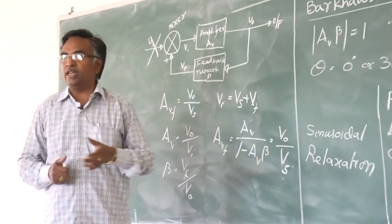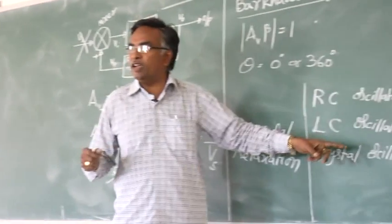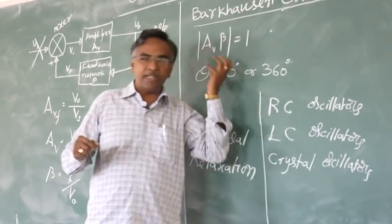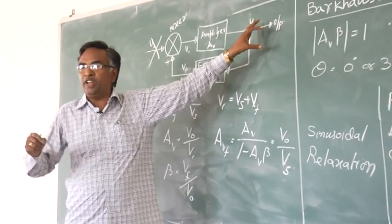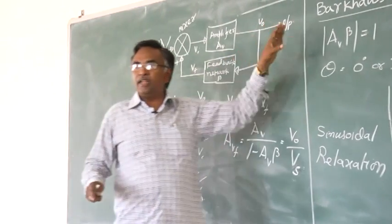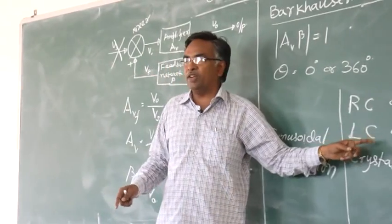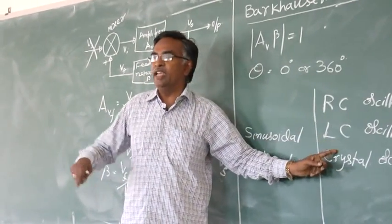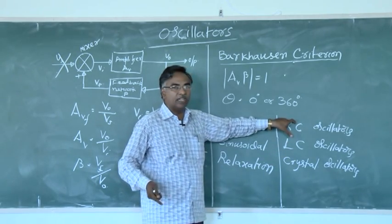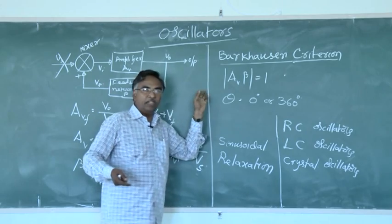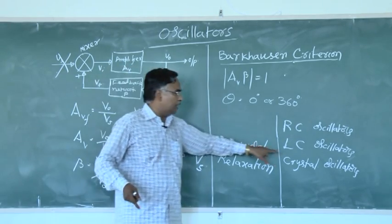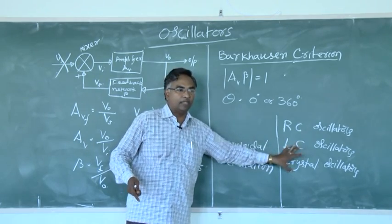Out of these three oscillators, the crystal oscillator is the highest stability oscillator. Highest stability means once this oscillator generates a signal, its frequency remains constant irrespective of changes in the surrounding conditions. There is no question of the crystal oscillator frequency changing even when surrounding conditions change. But LC and RC oscillators may change their generating frequency whenever surrounding conditions change. For that reason, the crystal oscillator is the highest stable oscillator.